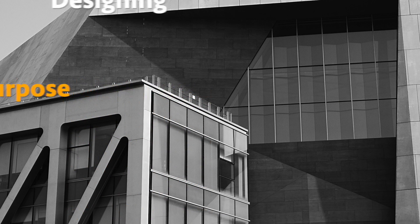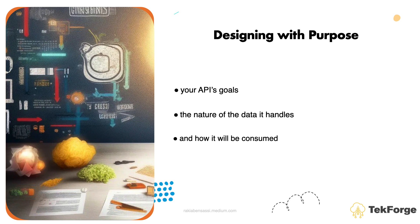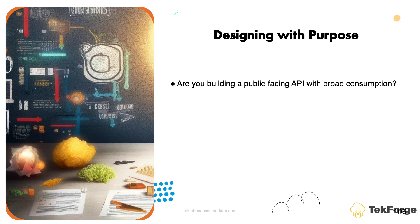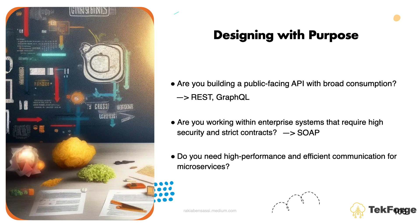Designing with purpose: in order to choose the appropriate architectural style, you need to consider your API's goal, the nature of the data it handles, and how it will be consumed. There is no one-size-fits-all answer. Are you building a public-facing API with broad consumption? REST or GraphQL might be your best bet. Are you working with enterprise systems that require high security and strict contracts? Then SOAP could be the way to go. Do you need high-performance and efficient communication for microservices? Take a closer look at gRPC.